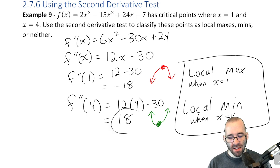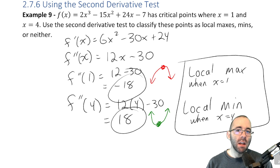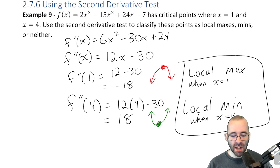And again, it's weird that 18 is the min and negative 18 is the max. But remember, this isn't the function value. These are the derivatives, the second derivative specifically. So we would have to actually use the original function to find the y values.